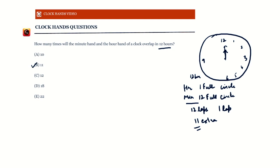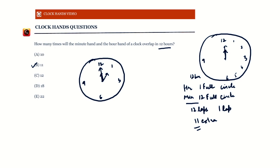Now let's look at this from the perspective of relative speed. We start at 12 o'clock. From 12 to 1, in one hour the hour hand goes from 12 to 1. The angle between any two consecutive hours is 30 degrees, because the full 360 degrees is divided into 12 parts. So the hour hand covers an angle of 30 degrees in one hour.